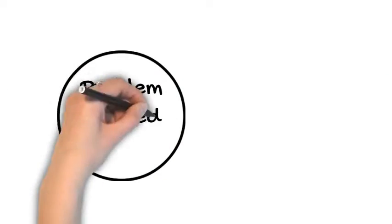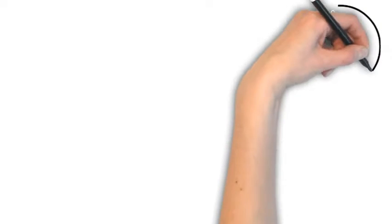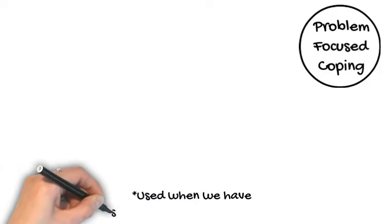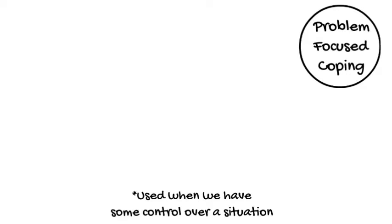Two other ways of managing stress are problem-focused coping and emotion-focused coping. When we have control in a situation, we can use problem-focused coping. This involves figuring out which pieces we can control and how we can use that to make the situation better for ourselves.